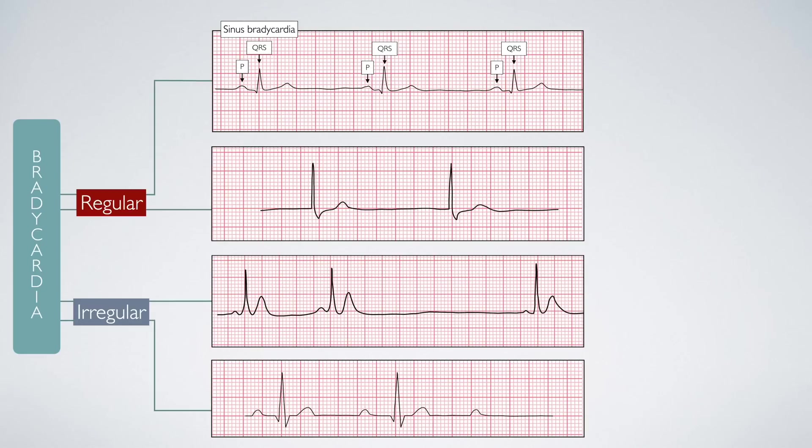If the rhythm is regular but there are no P-waves preceding the QRS complexes, this is a junctional escape rhythm. If the rhythm is irregular and there is a pause of more than 2 seconds, which is the equivalent of 10 large squares, this is likely sinus arrest. You can confirm the diagnosis by measuring the number of squares from the first P-wave to the beginning of the next P-wave. It must be more than 10 large squares to be significant.